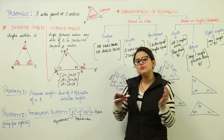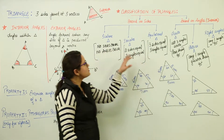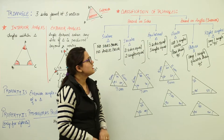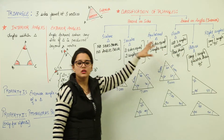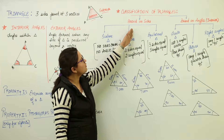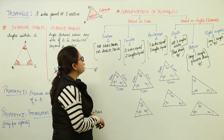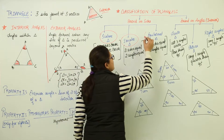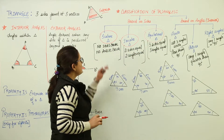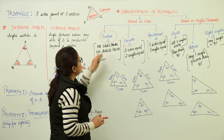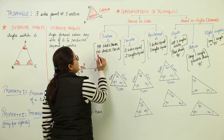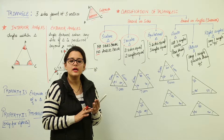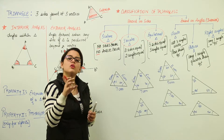Property number two is the Pythagoras property, but before doing that, let's understand the classification of triangles. Classification is done on two bases: based on sides and based on interior angles. If you consider sides, the triangle is divided into three types: scalene triangle, isosceles triangle, and equilateral triangle. In a scalene triangle, no sides are equal and no angles are equal — all three angles and all three sides have different measurements.